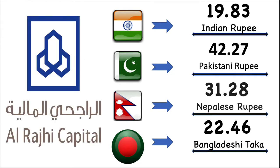Now we are going to talk about the average bank exchange value for each country in details. Indian Rupees market exchange value is 19.83. Pakistan Rupees market exchange value is 42.27. Nepal Rupees market exchange value is 31.28 Nepalese Rupees. Bangladesh market exchange value is 22.46 Bangladesh Taka.